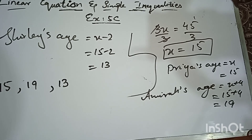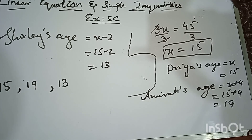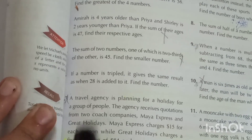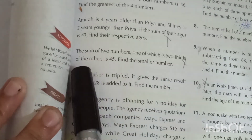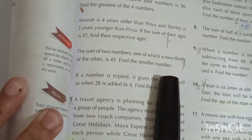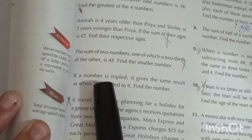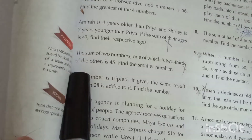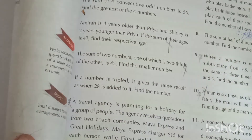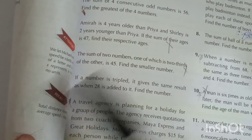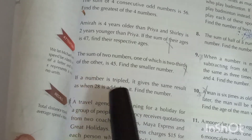Now moving to question number 4: the sum of two numbers, one of which is two-thirds of the other, is 45. Find the smaller number. We don't know either number, but one is two-thirds of the other and their sum is given as 45.